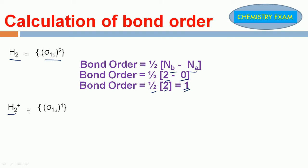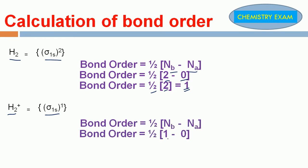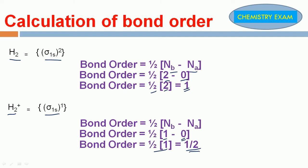Next, H₂⁺. The electronic configuration for H₂⁺ is sigma 1s¹. Bond order: 1 bonding electron, 0 anti-bonding electrons. Therefore, 1/2 into 1 is equal to 1/2. The bond order for H₂⁺ molecule is 1/2.